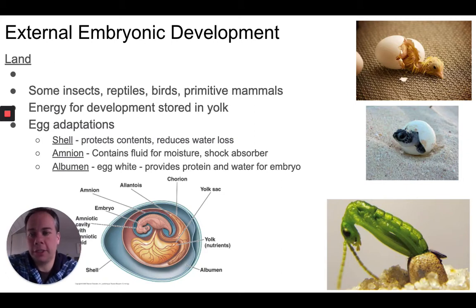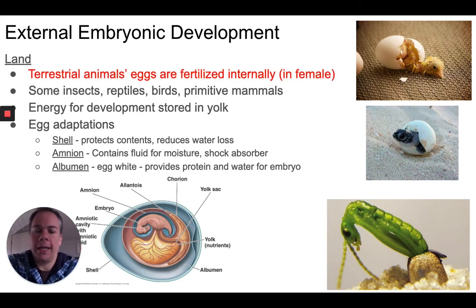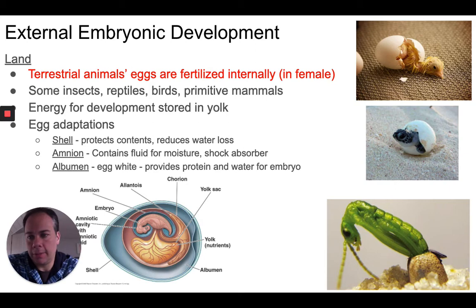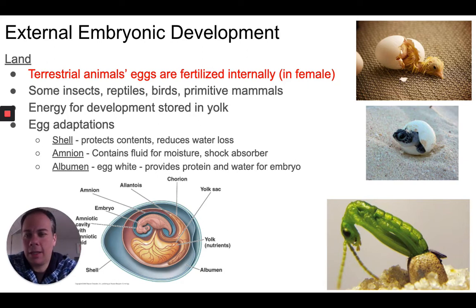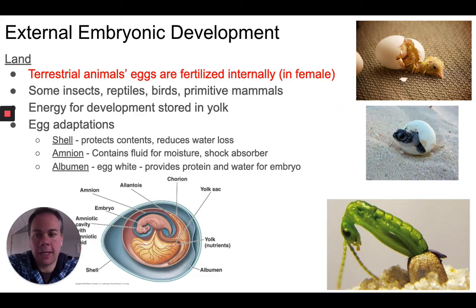Other organisms reproduce on land, like reptiles and birds. They typically have internal fertilization — the male deposits sperm cells into the female's body where they fertilize the egg — but then the developing embryo goes on to develop outside the body. So they have internal fertilization but external development. The eggs laid by these organisms contain within them fluids, nutrients, and everything the growing embryo needs to survive. Organisms using external embryonic development include some insects, reptiles, birds, and even a couple of primitive mammals.